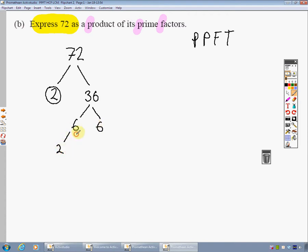2 times 3. Well both 2 and 3 are prime numbers so I circle them, and similarly I have 2 and 3 here also. So now I've got 2, 2, 3, 2, 3. To express as a product of its prime factors we really ought to write them in order.